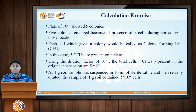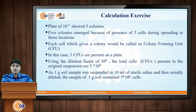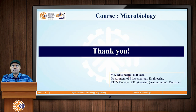Going back to calculate: 1 gram of soil sample was suspended in the first original tube of 10 ml saline. Because the original suspension contains 5 × 10 raise to 6 cells, 1 gram of soil sample contains that many cells from the original source. Hence we conclude that 1 gram of soil sample contains 5 × 10 raise to 6 cells. In this way, the concentration of bacteria is determined in a given sample. I hope you have understood this process of standard plate count. Thank you.